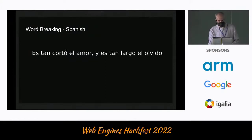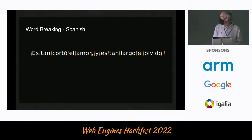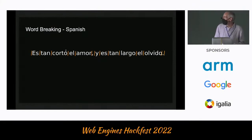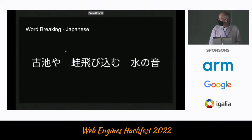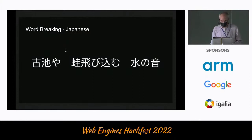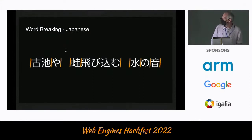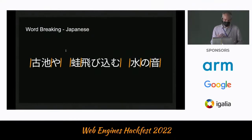Here's an example from Spanish. That gets segmented more or less the way you'd expect and could probably be done by anyone familiar with a European language without knowing Spanish. Here's an example of Japanese — a haiku by Bashō. I can't read or speak Japanese so I'll let the computer do the work. You can see that the word boundaries aren't necessarily where you'd expect if you don't know Japanese, and it becomes a more complicated problem.